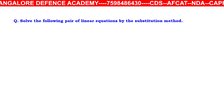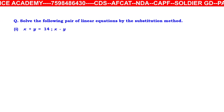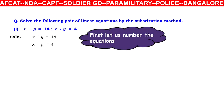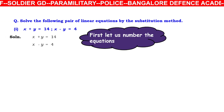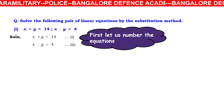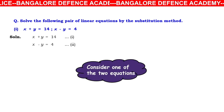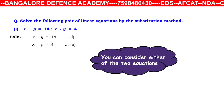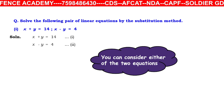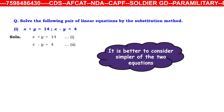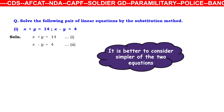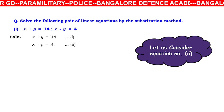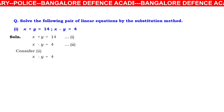The first method is the substitution method. Example: solve x + y = 14 (equation 1) and x − y = 4 (equation 2). Consider one of the two equations — it is better to take the simpler one. Let us consider equation 2: x − y = 4.